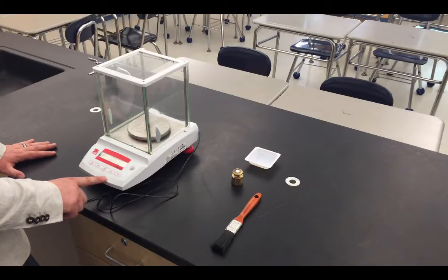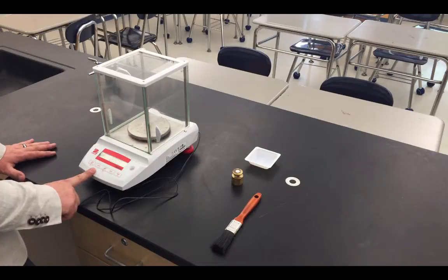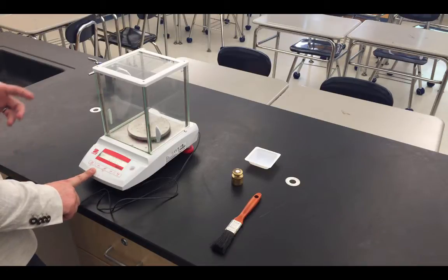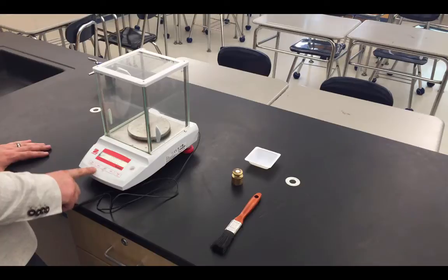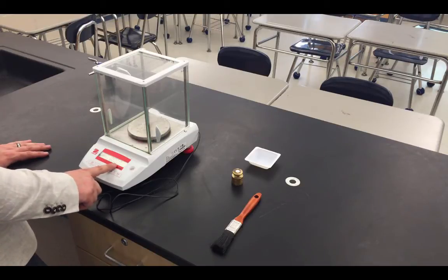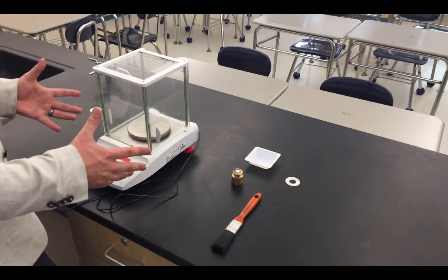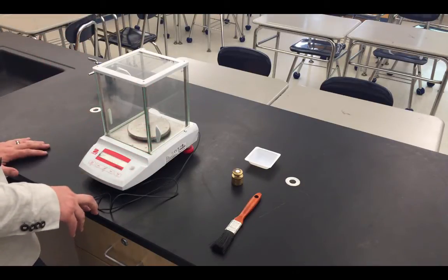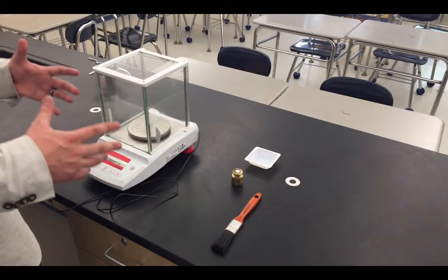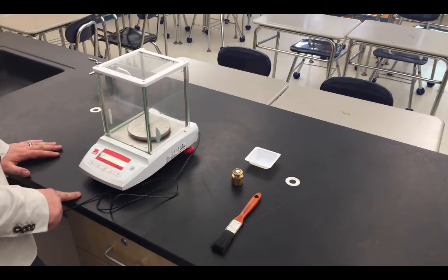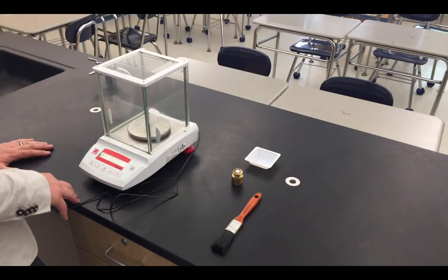One of the things we can definitely do with the balance here is you'll notice the button in the center has this 0 slash T marking. This is a button for either zeroing the balance or tearing the balance. If at any point in time the balance does not read 0, you can press this button and the balance will recalibrate itself so that whatever is on the balance pan reads out as zero grams. It's a good practice, no matter what, when you start using a balance, to always hit the tear button to ensure your balance is properly zeroed out.